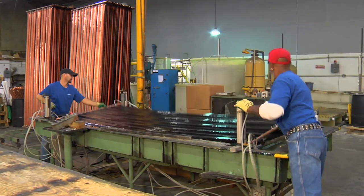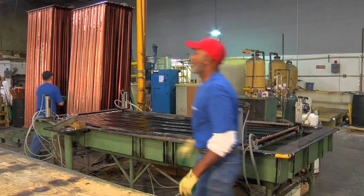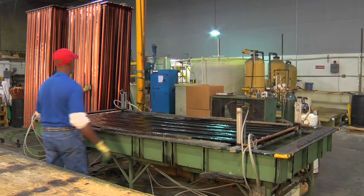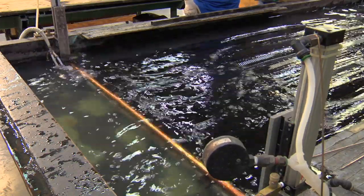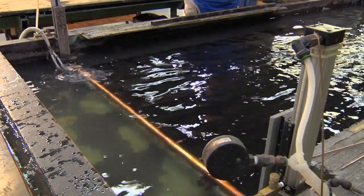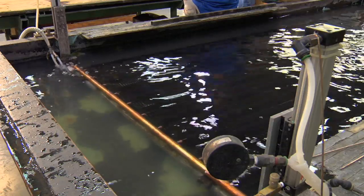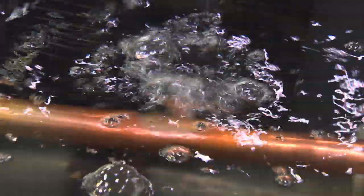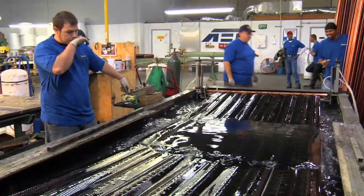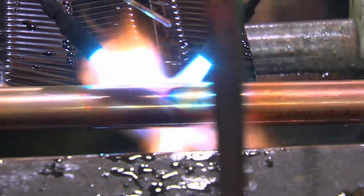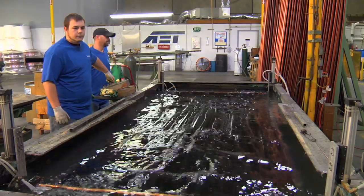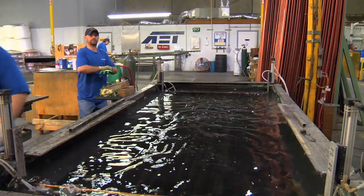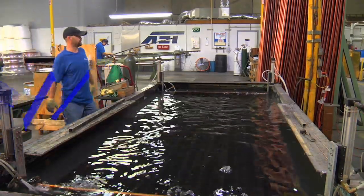Once completed, the absorber plate goes to a pressure check table. The plate is placed on the rack, the headers are clamped, and then it's immersed in water under pressure. The air valves are open to release air inside the absorber, while it's checked for leaks. Should air bubbles be present, the absorber is raised out of the water, and any leaks are repaired. Again, the absorber is immersed in the water and goes through the same checking process to ensure the integrity of the absorber plate.